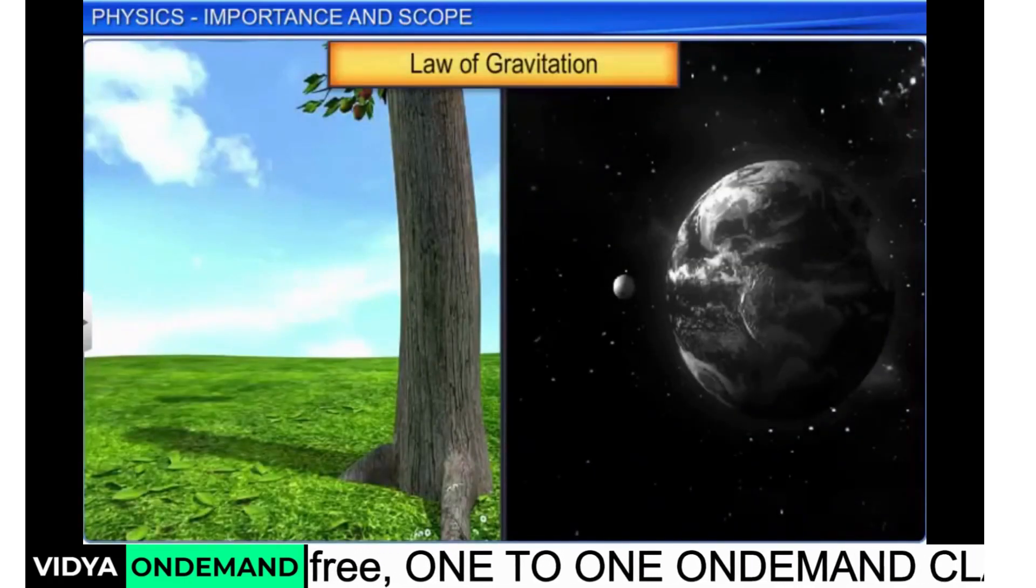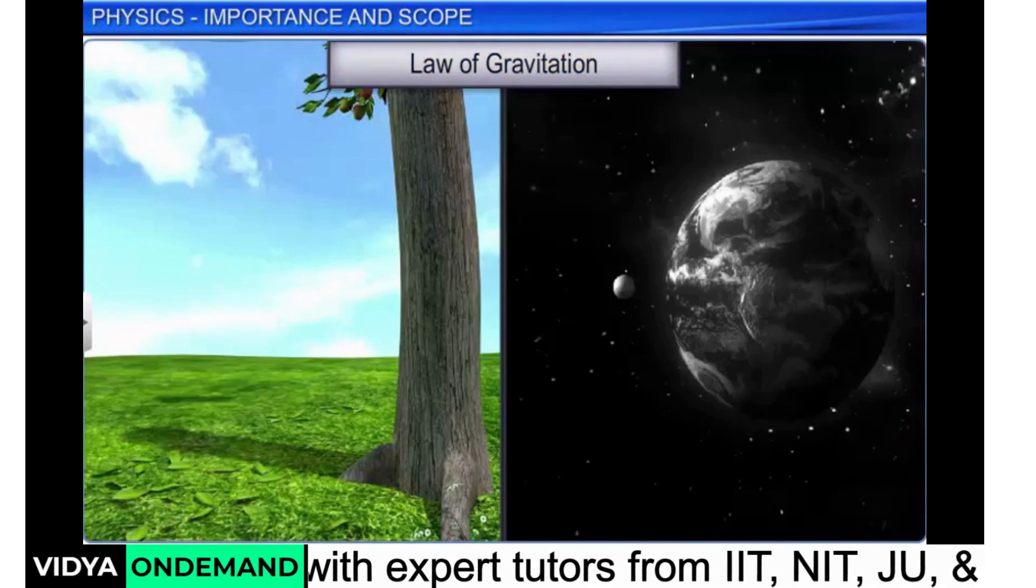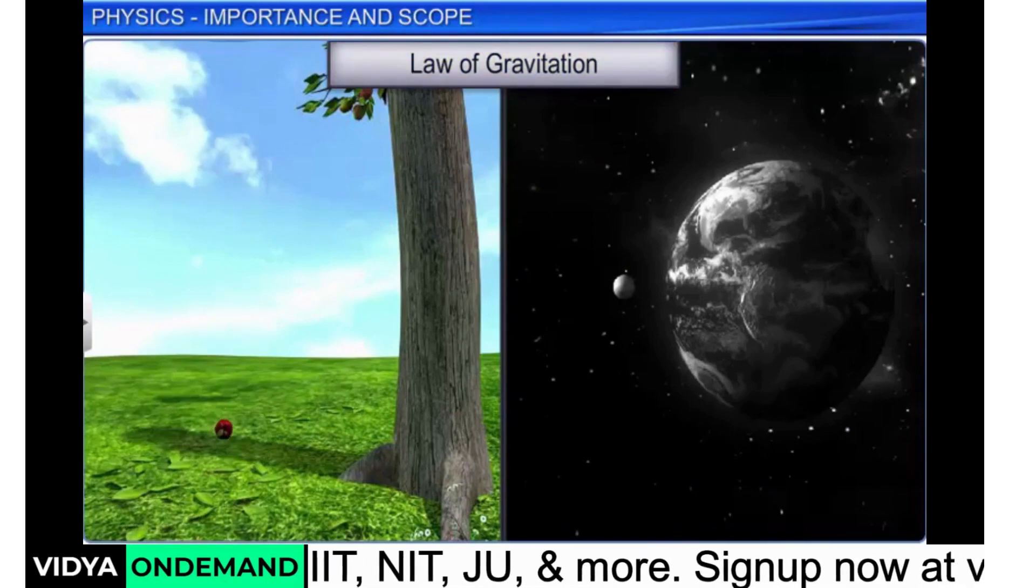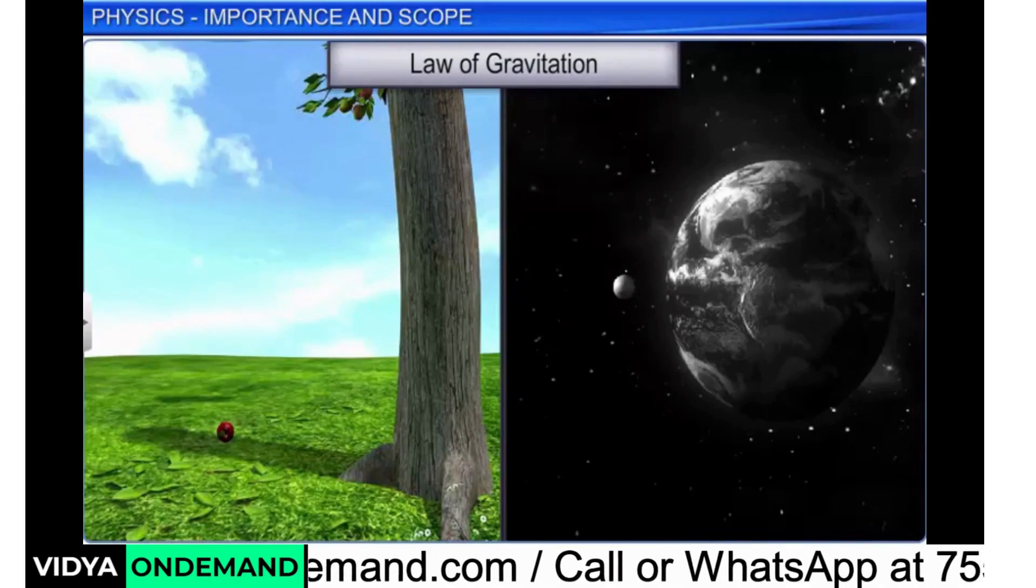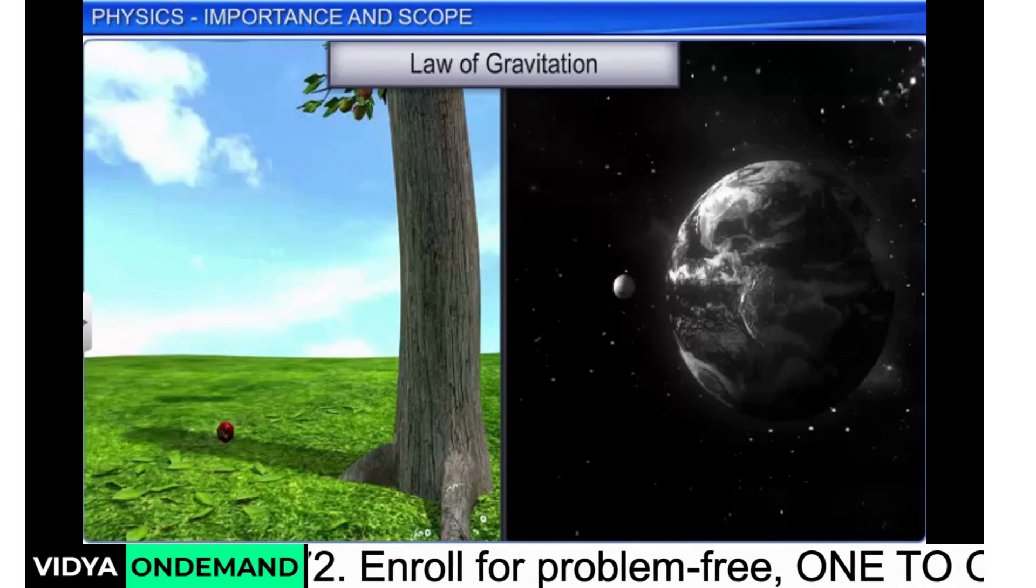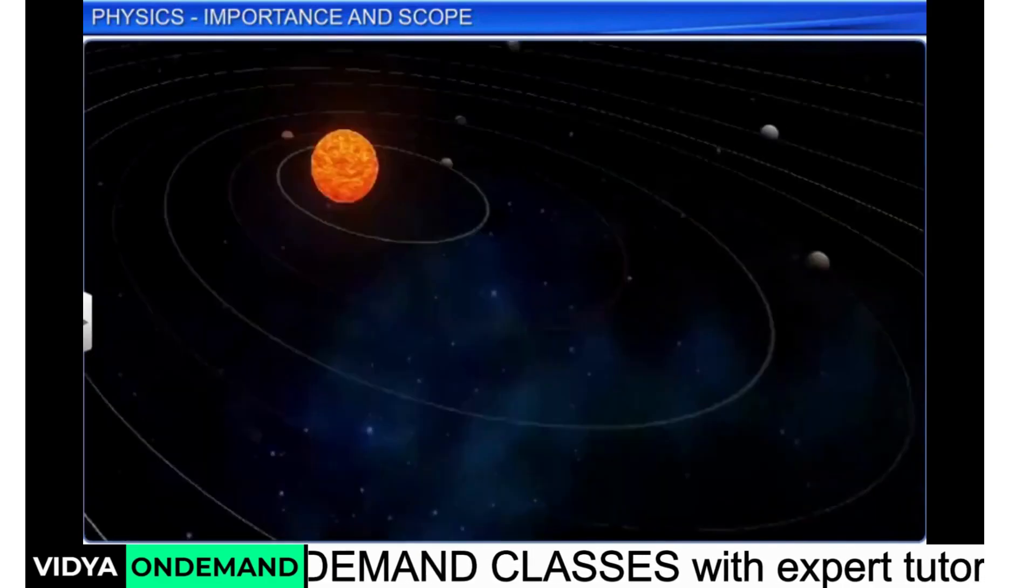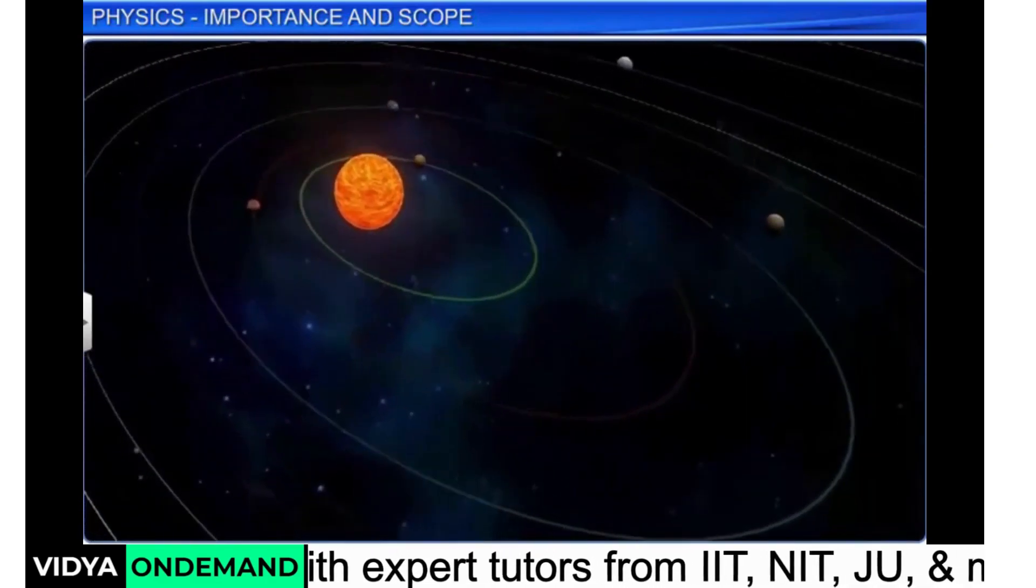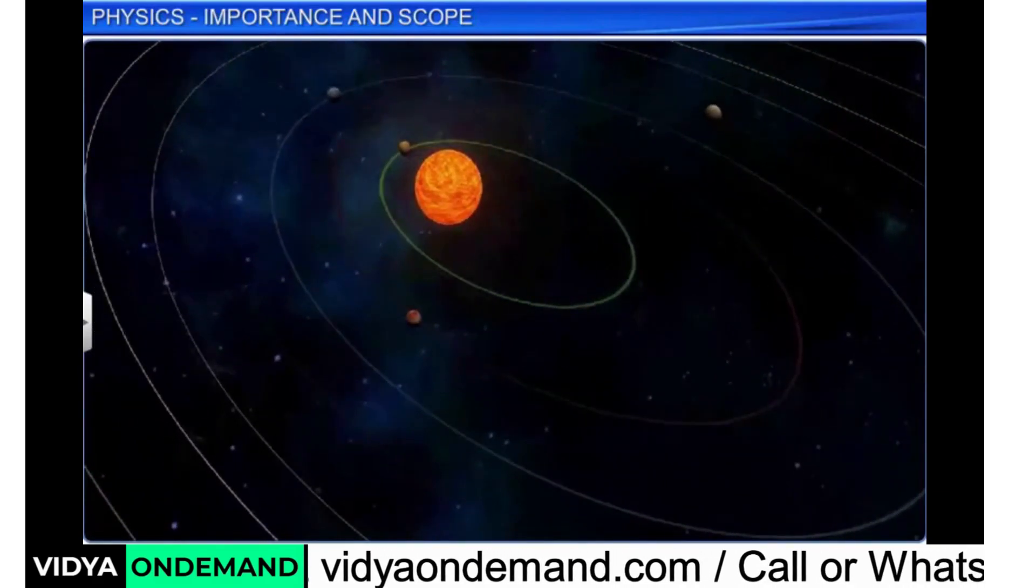For example, the law of gravitation, which describes the motion of an apple detached from a tree, which eventually falls to the earth, also explains the nature of the forces between earth and the moon, and also the force that bounds the planets in the solar system in their orbits and keeps them in motion.